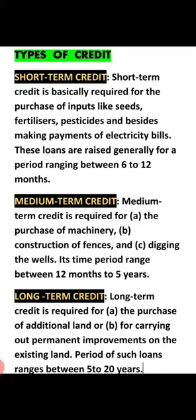Then comes medium term credit. Suppose a farmer needs to purchase machinery, arrange fencing according to the area, dig wells, or make tube well arrangements. These are expenses the farmer cannot repay within 6 to 12 months — repaying these requires 1 to 5 years. This is medium term credit.